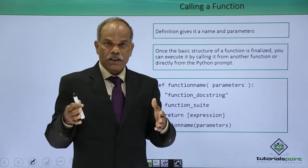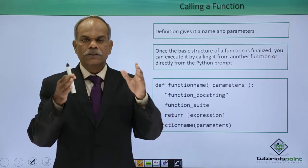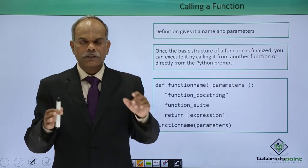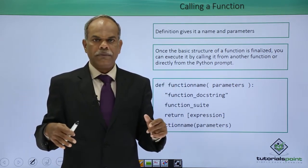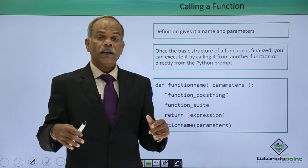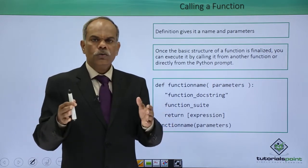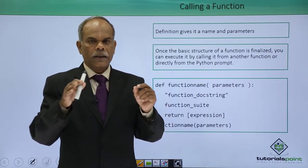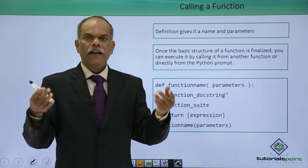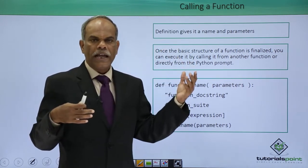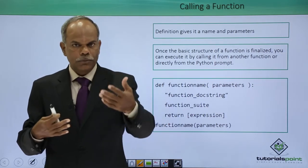Once the structure of the function is finalized—you've decided the name, the parameters, the documentation string, and the process to be done—you are in a position to call the function. To call the function, all you have to do is write the name of the function with the brackets. If the definition has a certain number of parameters, those parameters must be actually provided. That is how you call the function.